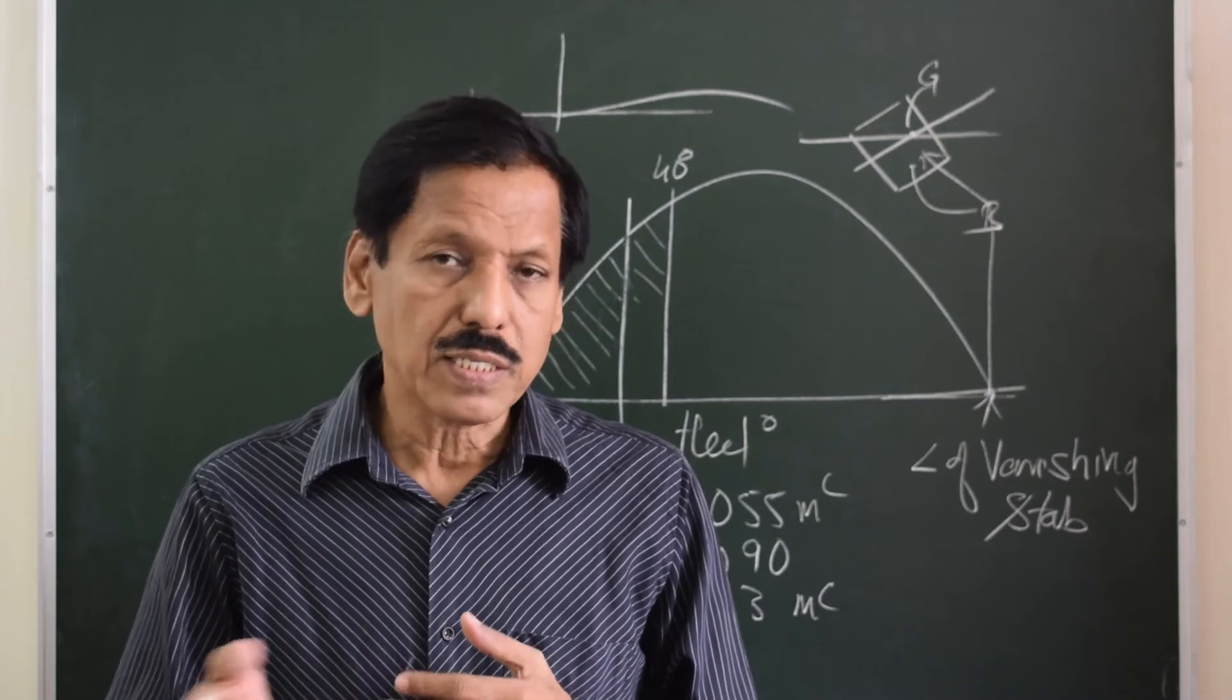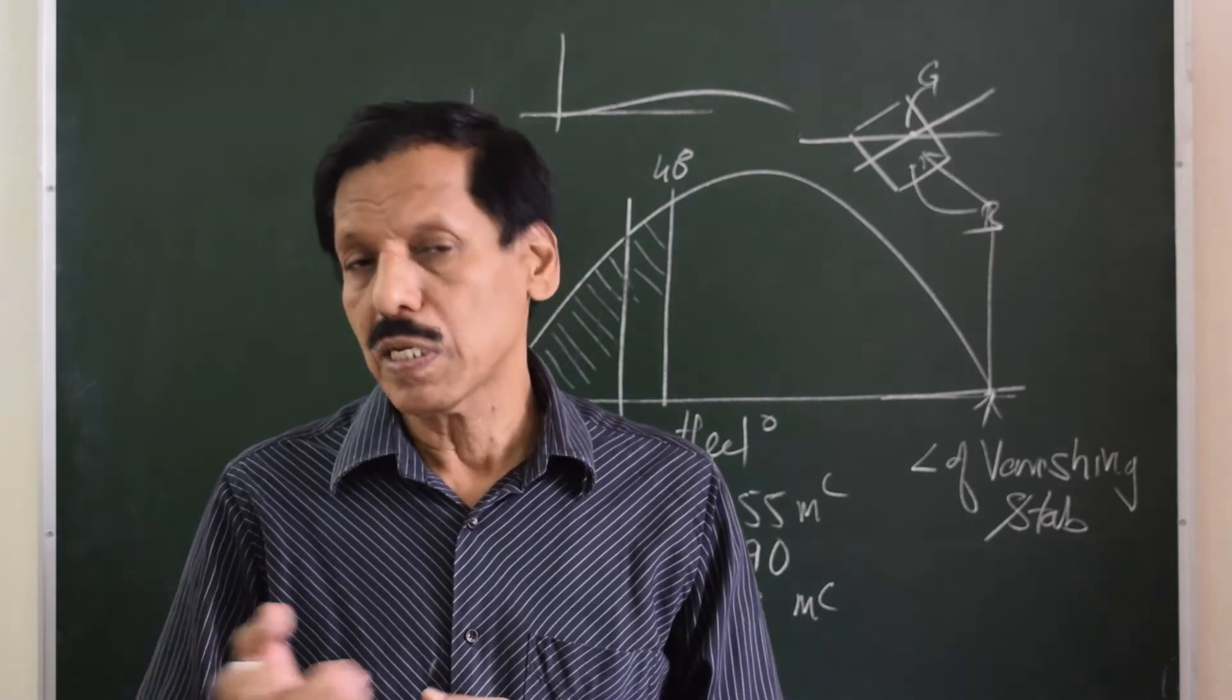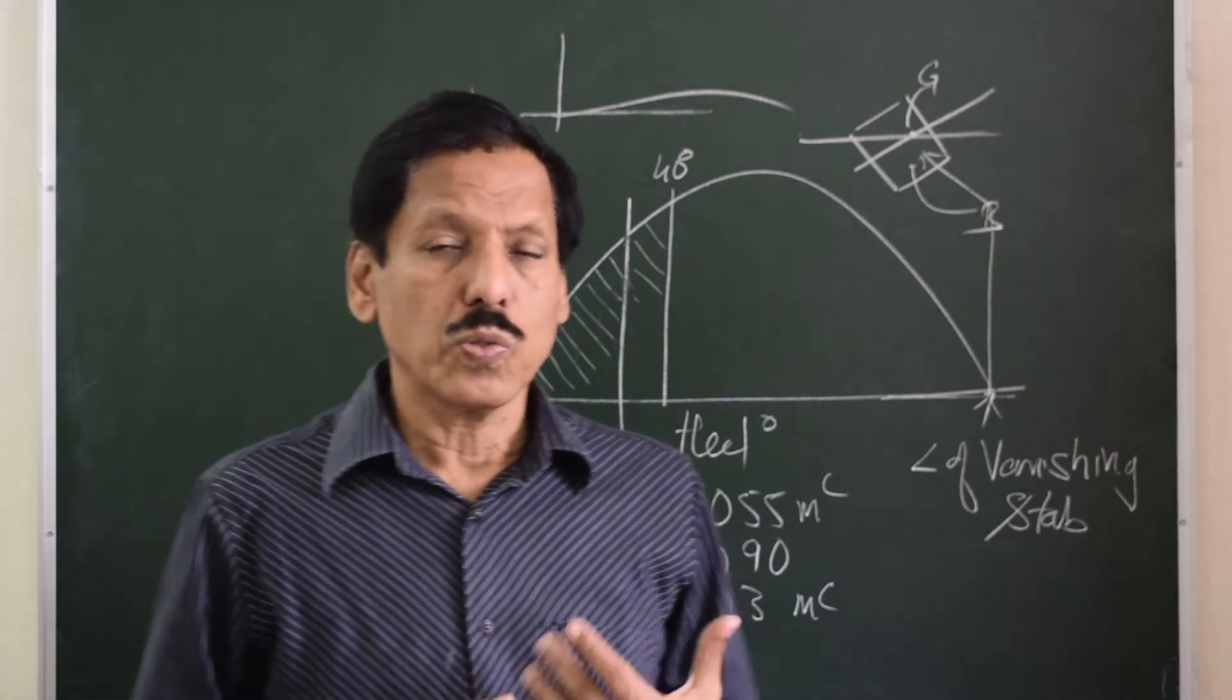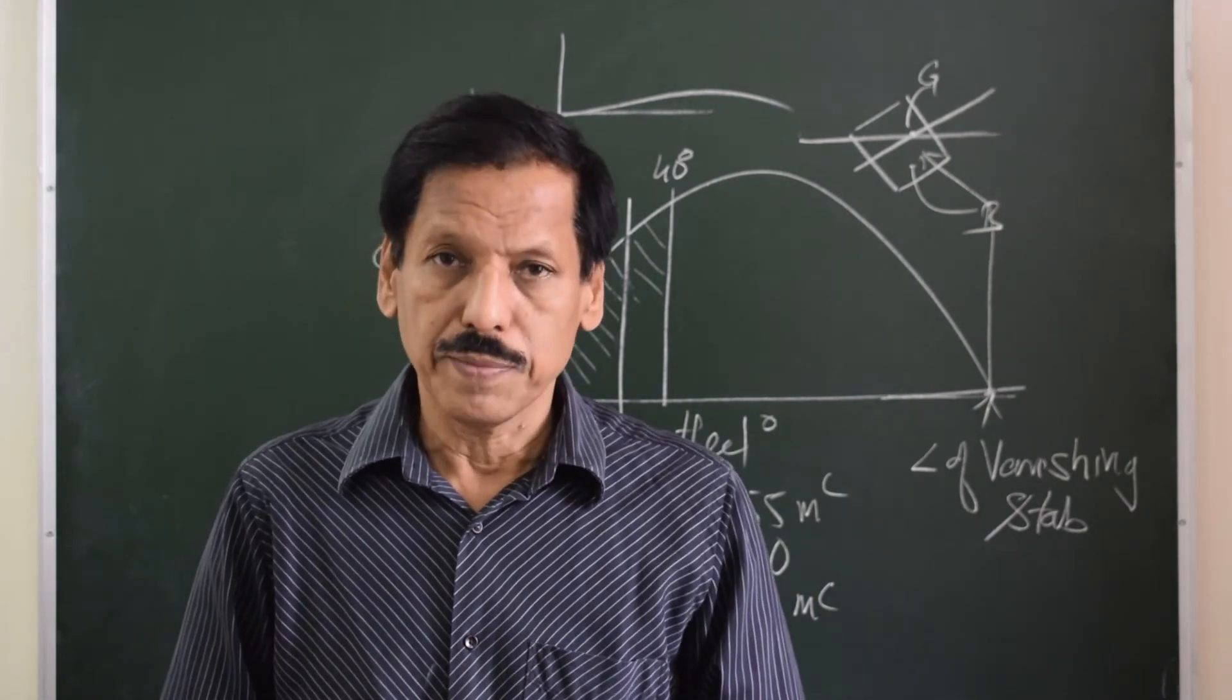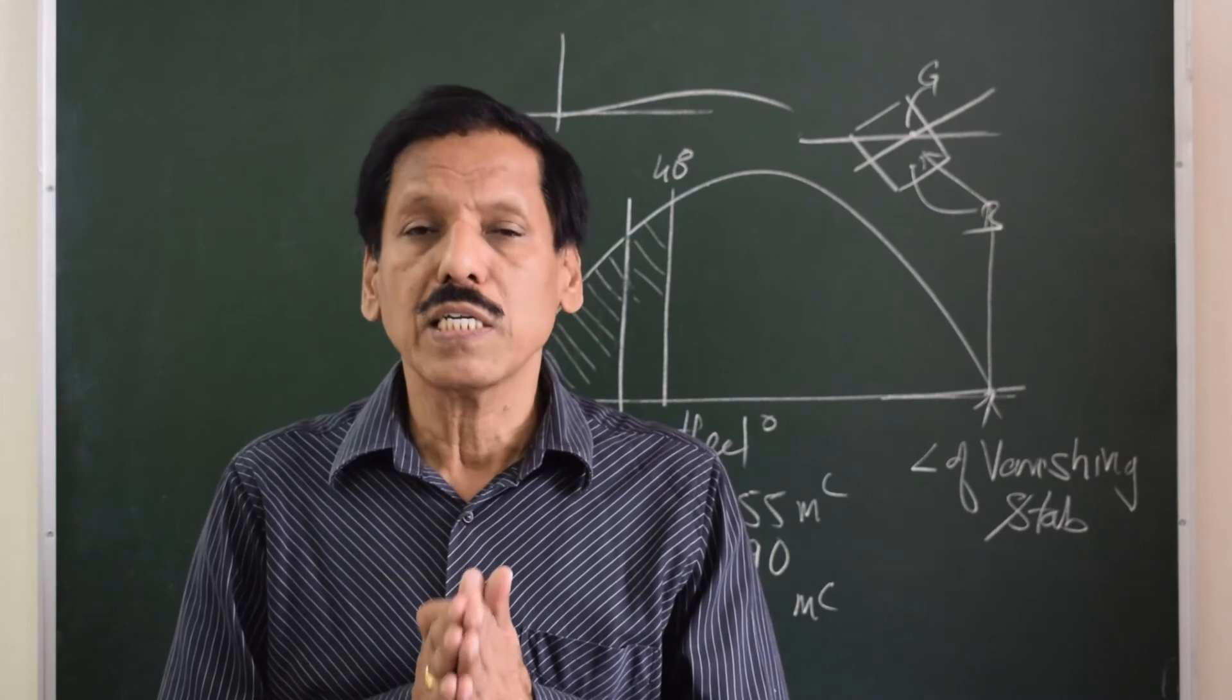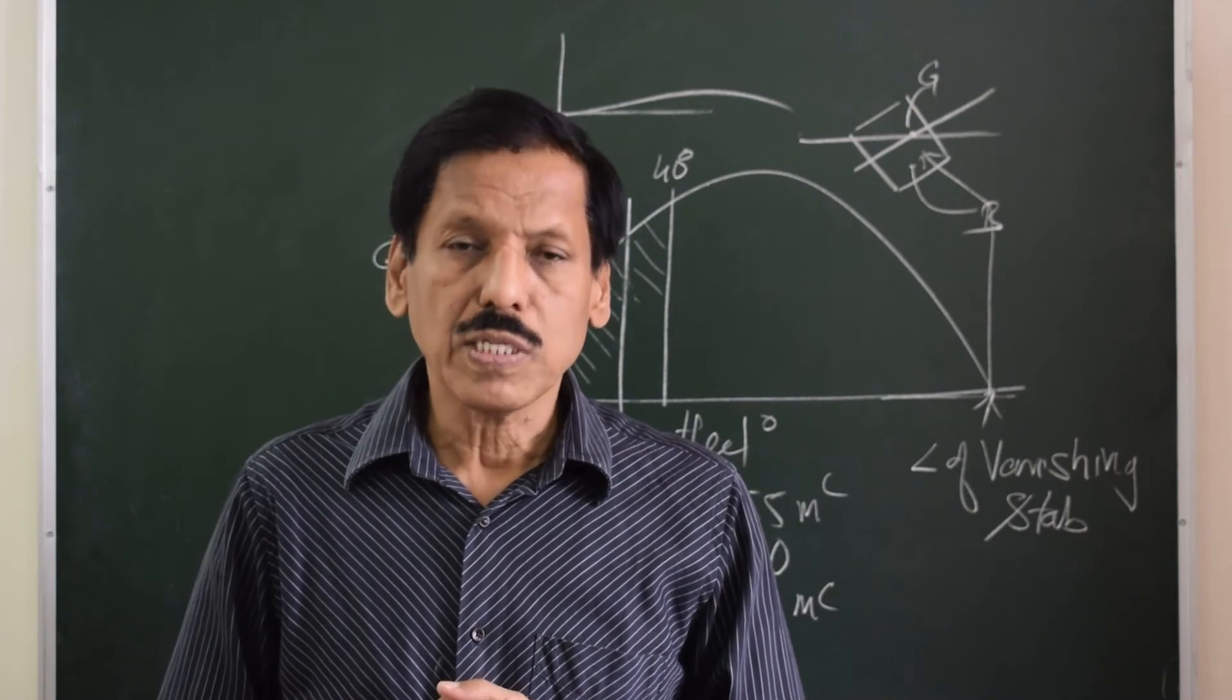If we look at the next criteria, it shows the importance of righting capability or righting lever beyond 30 degrees. If the ship gets into bad weather, normally the ship might roll up to 25 to 35 degrees. It is in this range that you need good stability. So what it says is there should be a GZ value or righting lever of at least 20 centimeters available beyond 30 degrees.